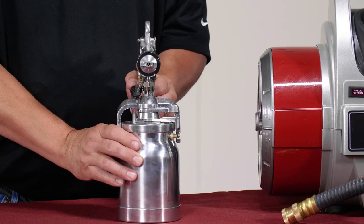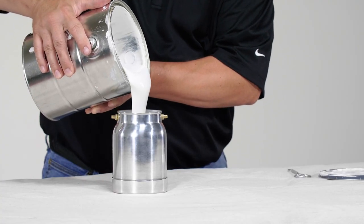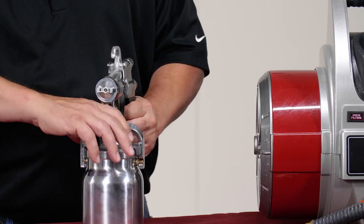To start, release the latch and remove the cup. Now fill the cup with paint just below the neck and reattach the cup to your gun.